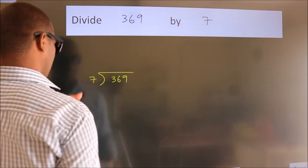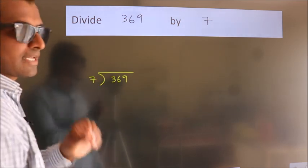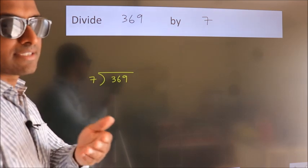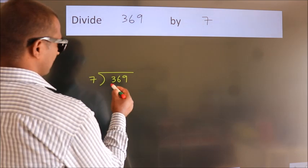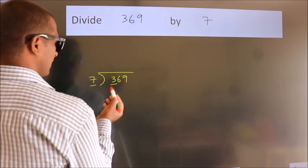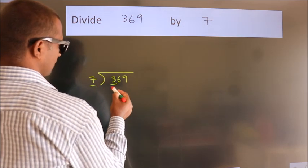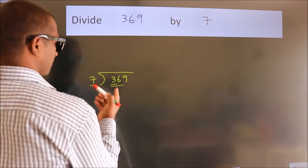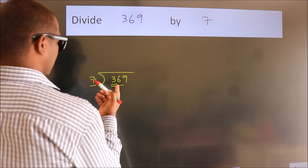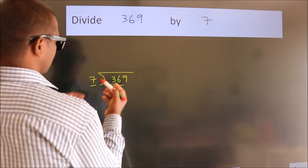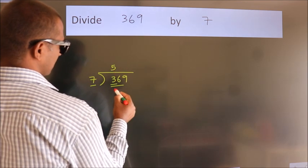This is your step one. Next, here we have 3. Three is smaller than 7, so we should take two numbers: 36. A number close to 36 in the seven table is seven fives, 35.